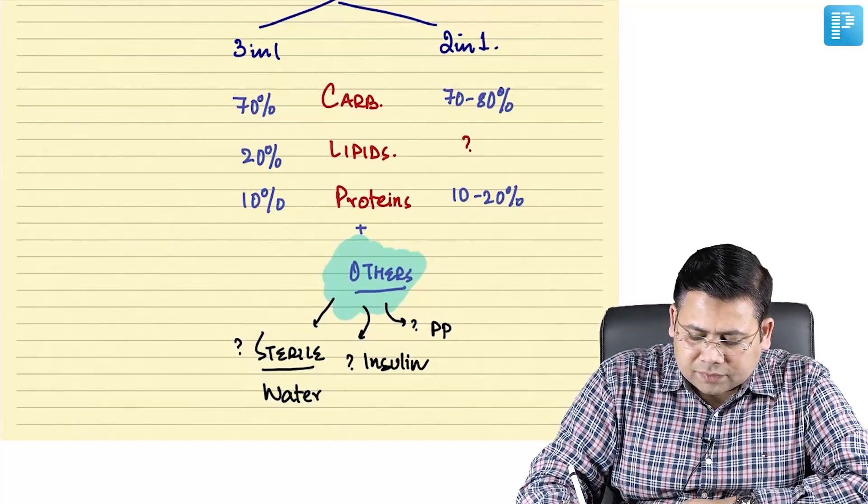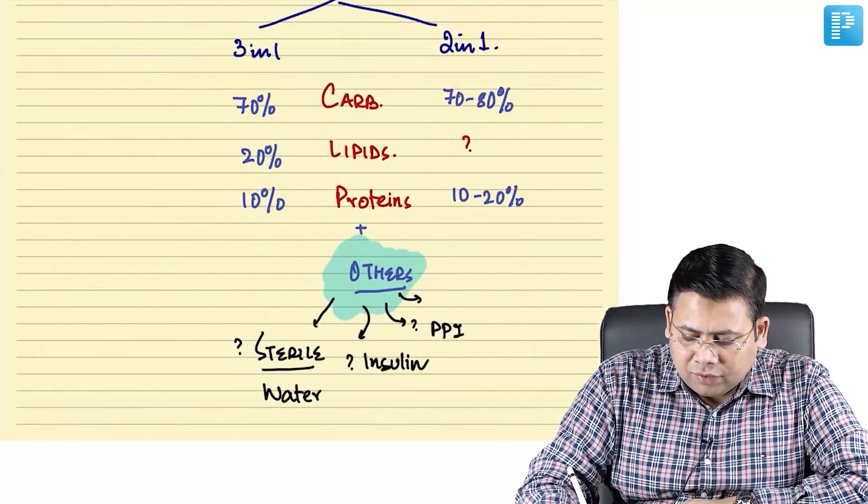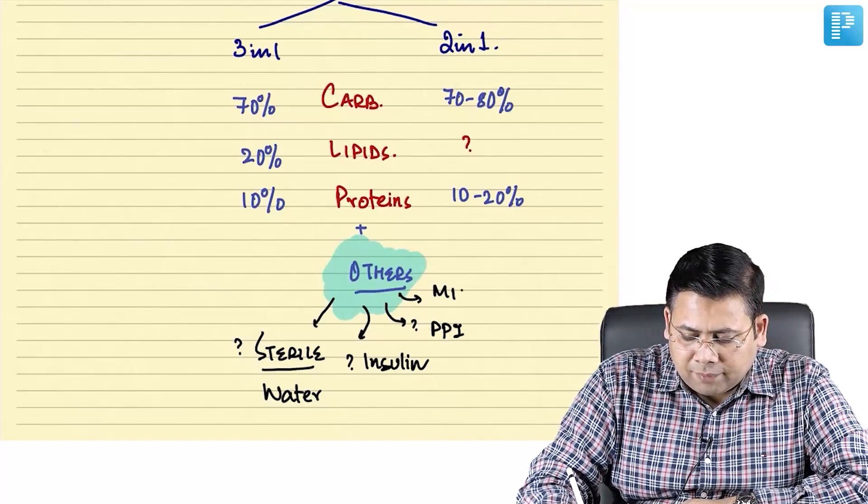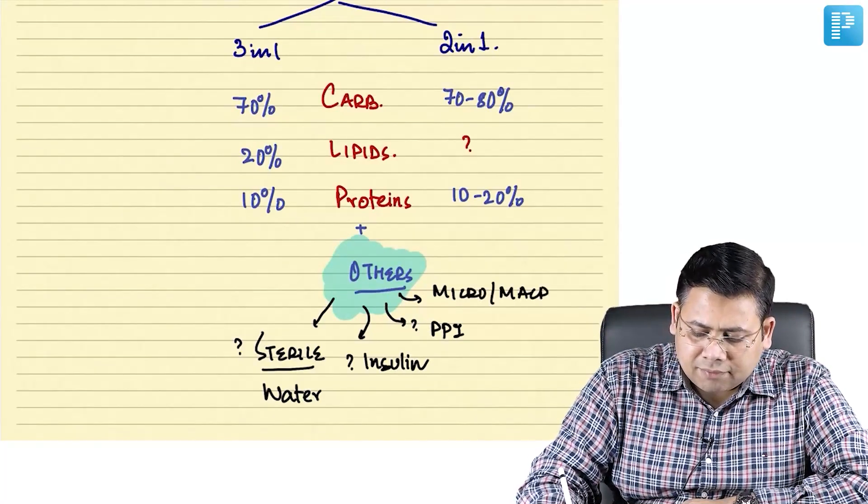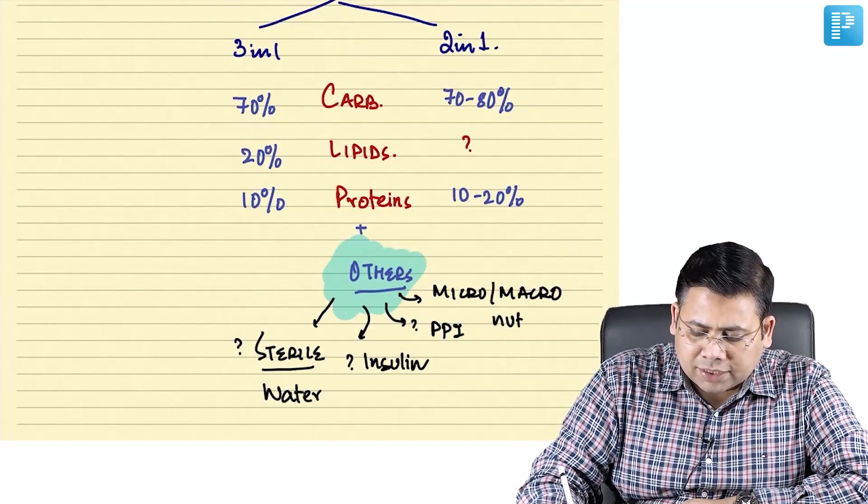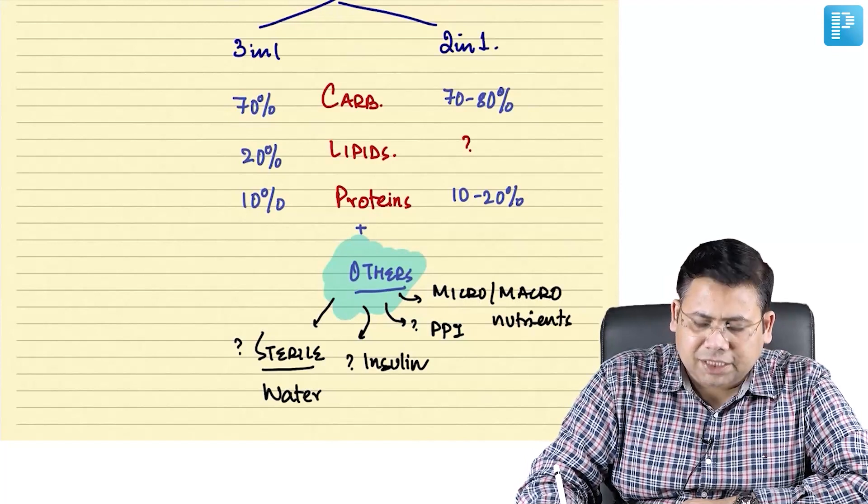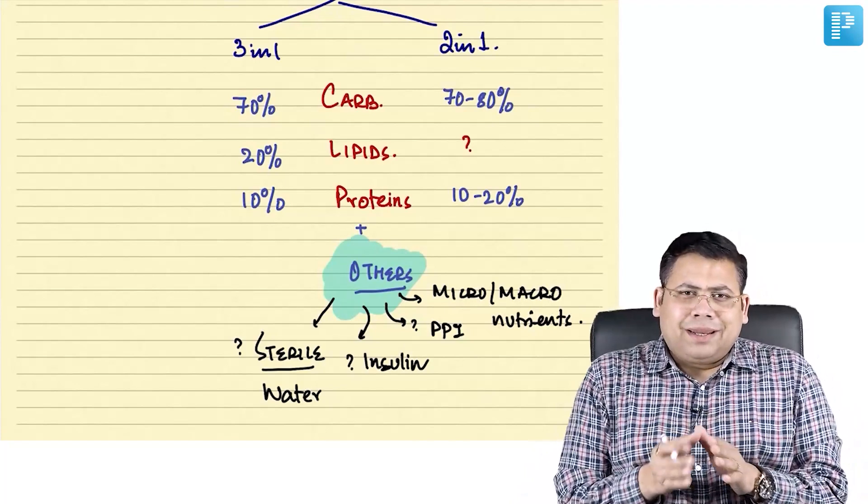We have PPIs. We have micro and macronutrients, and essential vitamins. They're important key agents of every.